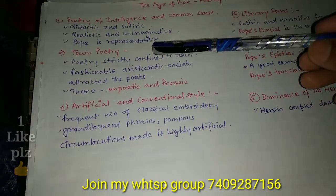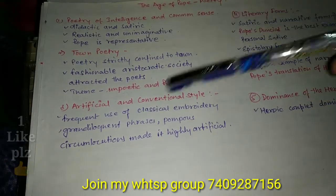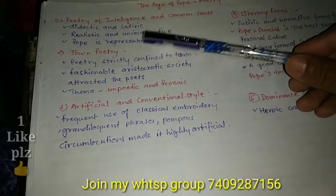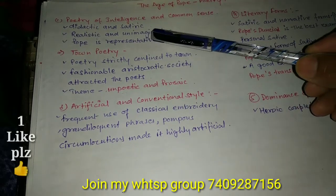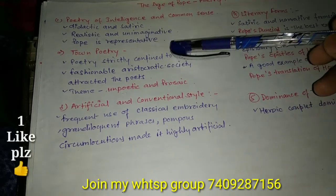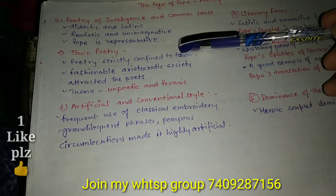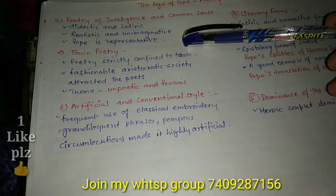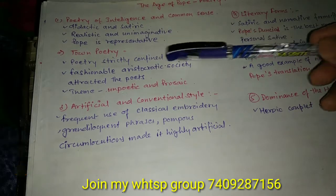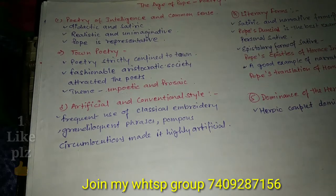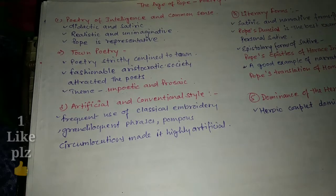Poetry of intelligence and common sense — this is a didactic poetry or satiric poetry. It is realistic and unimaginative poetry, and Pope is the representative poet of the age.